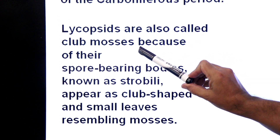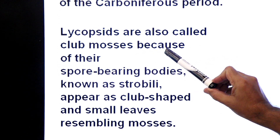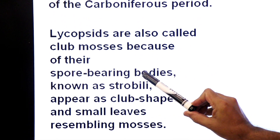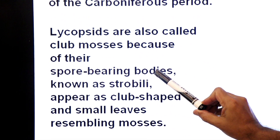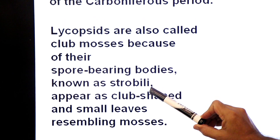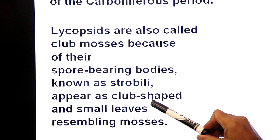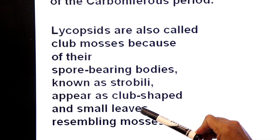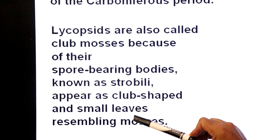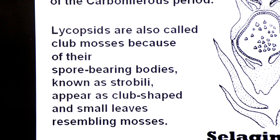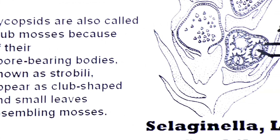Lycopsida are called club mosses because of their spore-bearing bodies known as strobilus, which appear club-shaped, larger at one end, and their small leaves resemble mosses. This is their strobilus.